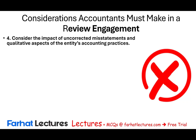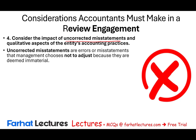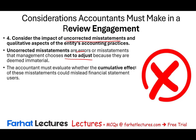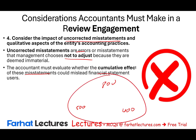We also have to consider the impact of any uncorrected misstatements and the qualitative aspects of the entity's accounting practices. We look at errors or misstatements that management chose not to adjust because they believe they are immaterial. We evaluate whether the cumulative of these misstatements could mislead the financial statement. They might have a $500 misstatement — immaterial — then another $400, then another $800. But when we add them all up, they might be material, especially if they are in one direction.